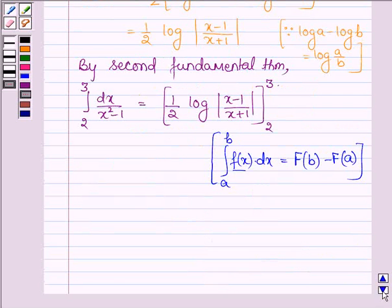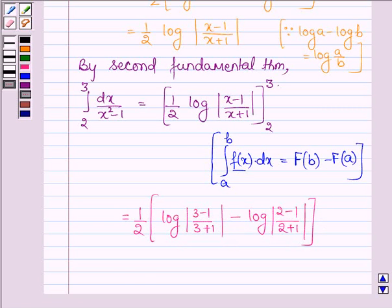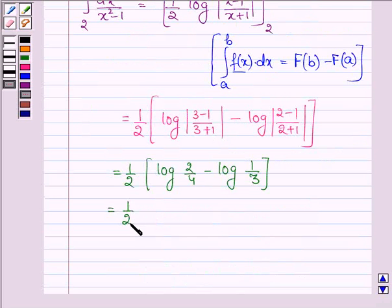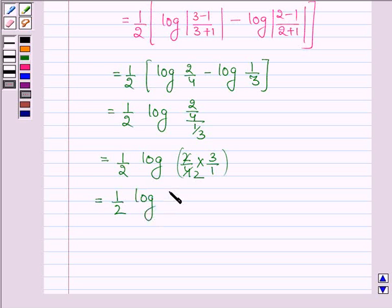Here this is the anti-derivative. Putting the upper limit 3 and subtracting the value at the lower limit 2, taking half common inside we have: log mod of 3 minus 1 upon 3 plus 1, minus log mod of 2 minus 1 upon 2 plus 1. This equals half times log 2 upon 4 minus log 1 upon 3, which can be written as half log of 2 by 4 upon 1 by 3. Simplifying, we get half log 3 upon 2.